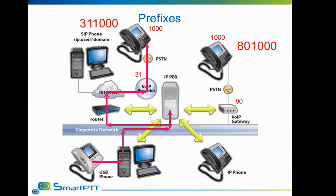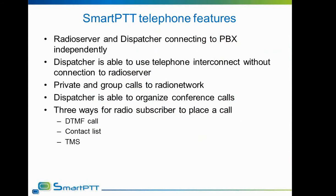SmartPTT allows connection to an existing PBX system to give subscribers of a radio network an opportunity to organize and participate in phone calls. Common functionality of SmartPTT with telephone interconnect includes: first, dispatcher and radio server are configured separately and do not rely on each other in scope of placing calls directly to PBX — the dispatcher can work with PBX even in case of radio server not running. Second, the radio server gives phone subscribers the ability to place private calls to a specified radio subscriber as well as group calls to a specified group, with all subscribers of that group participating.